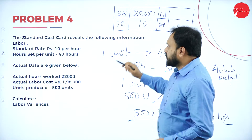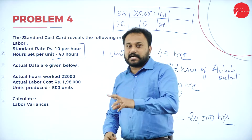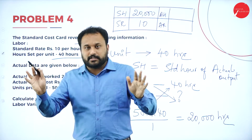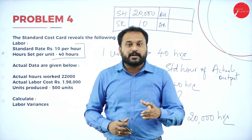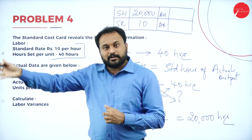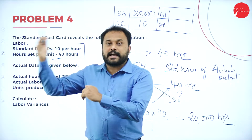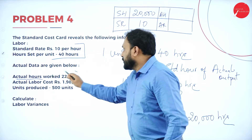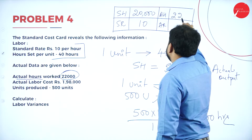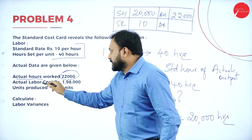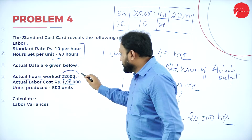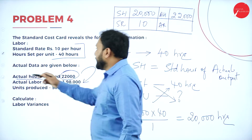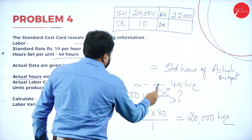I have SH and SR. Next is actual hour AH. They have given actual hours worked as 22,000, so I write 22,000. Now for actual labour cost, they have paid rupees 1,98,000 for those 22,000 hours. I need to find AR through a working note.